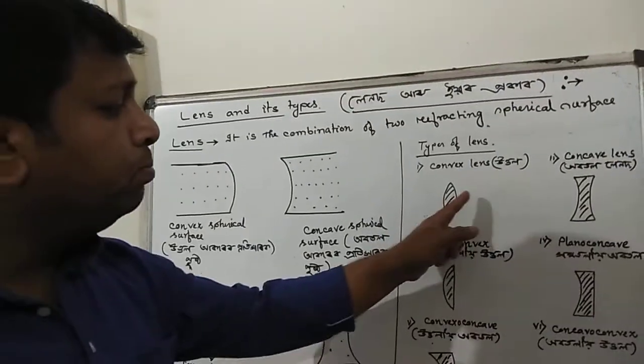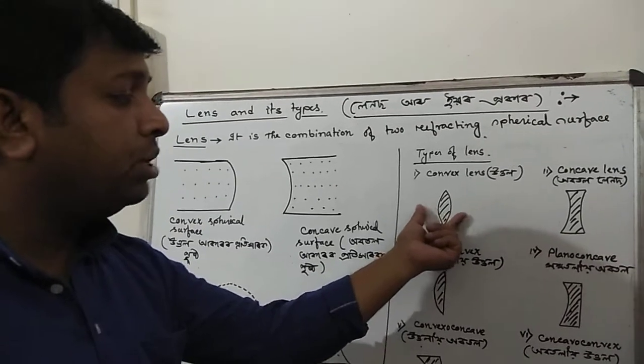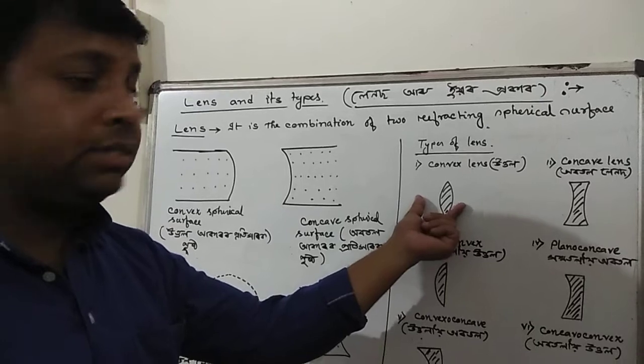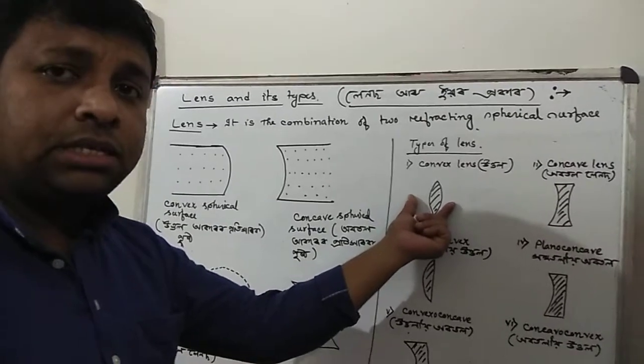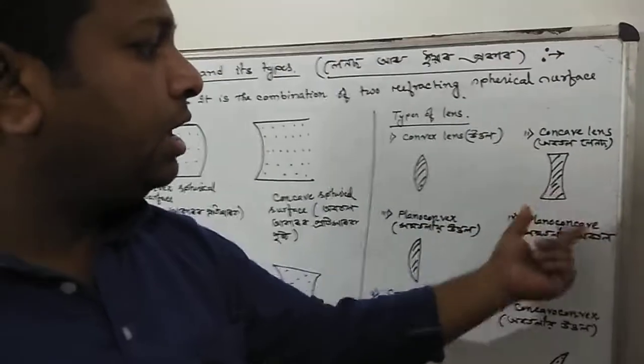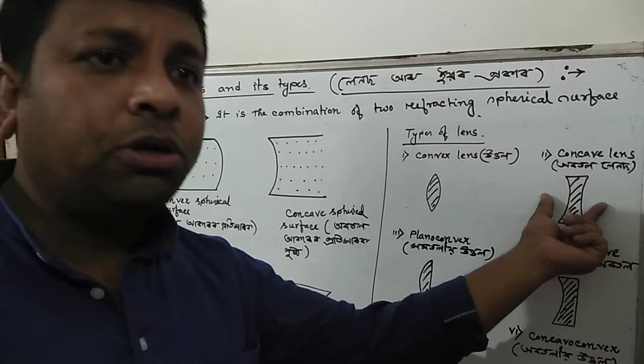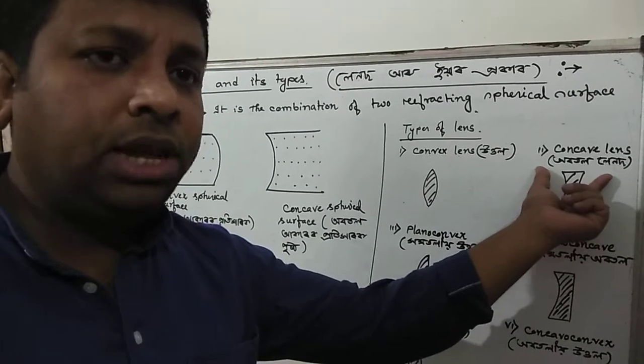Here both the spherical surfaces are convex. Both potikhar surfaces are convex. This is called convex lens or biconvex. This is uttal lens. When both spherical surfaces are obotol, this is obotol lens.